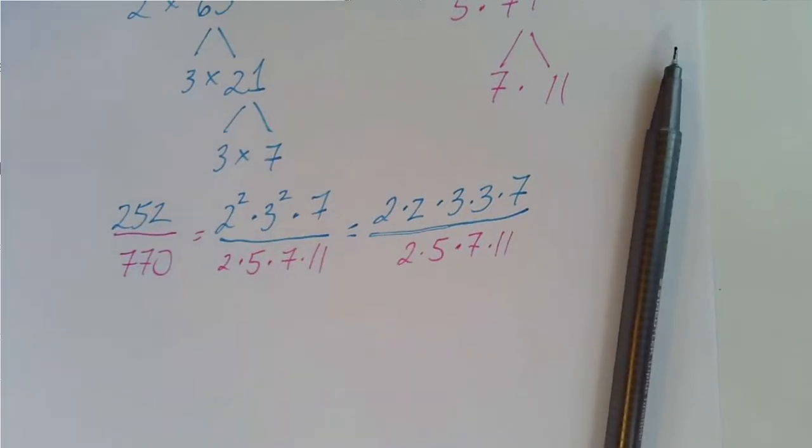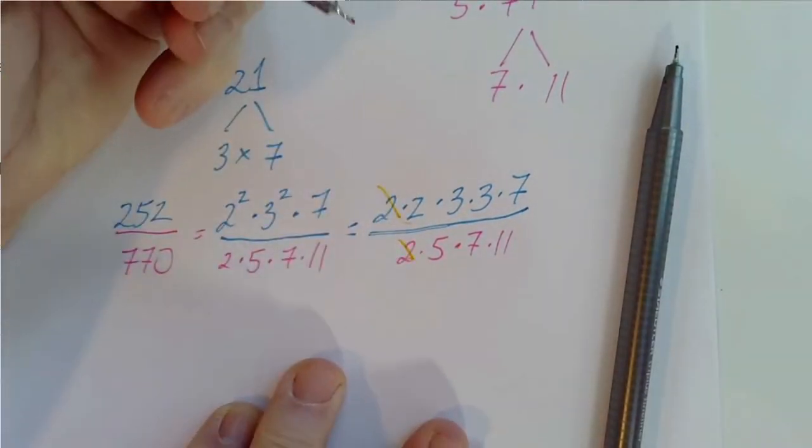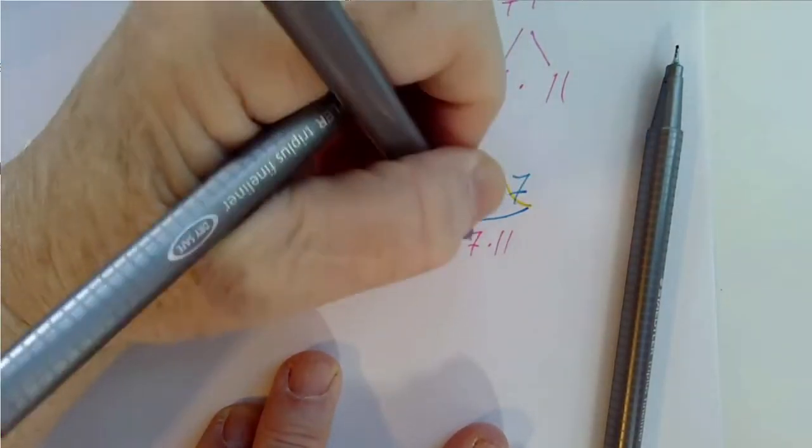Let's see. We've got a 2 in the numerator and denominator. And we have a 7 in the numerator and denominator. So what is left?